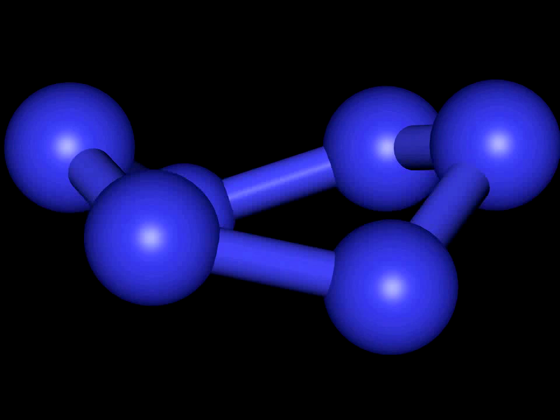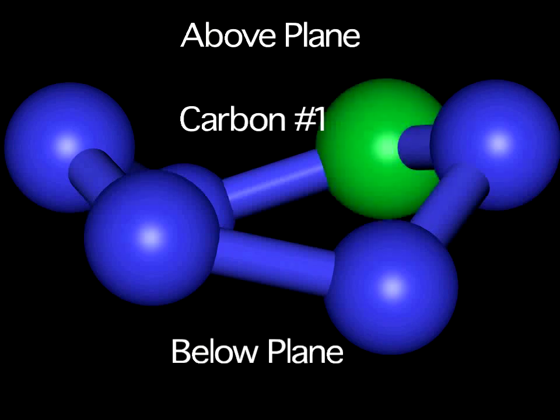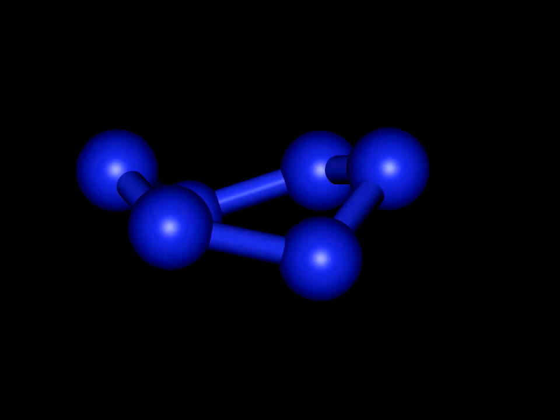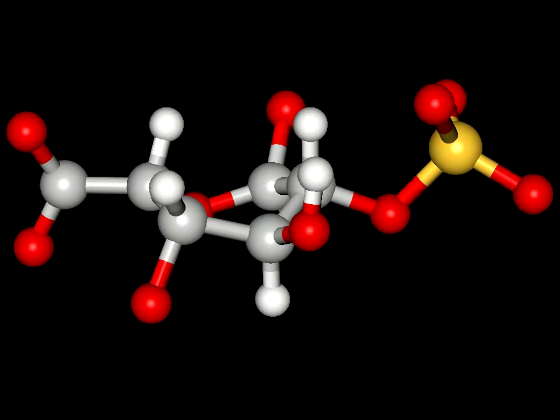This iduronic acid residue is found in what is called a twist, or skew, boat conformation. This is different from the traditional boat conformation, in that the number 1 carbon, as illustrated in green, is found about the plane of the ring, as opposed to below it. Now shown for comparison is the actual boat conformation.